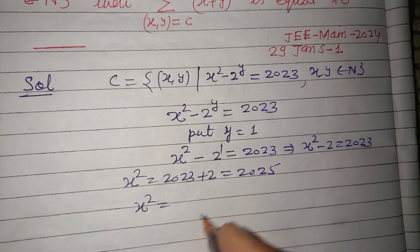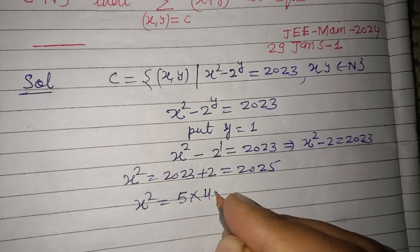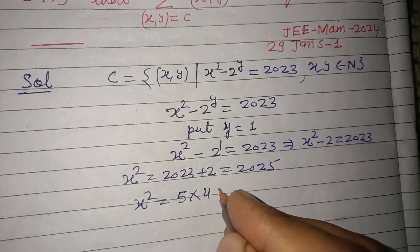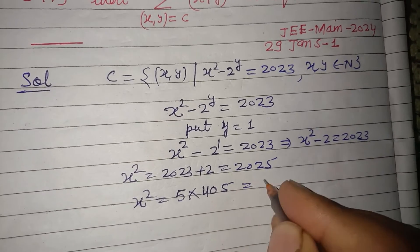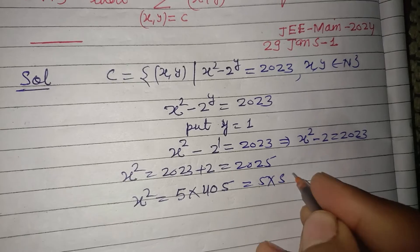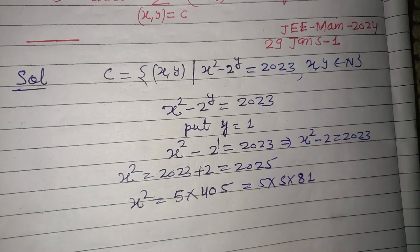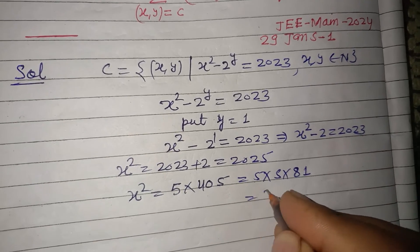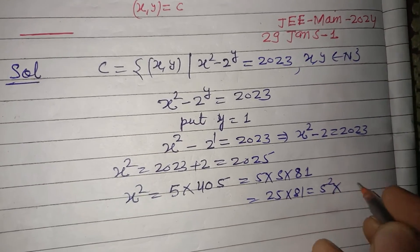And x² = 2025, we break down its factors. So 5 × 405, which is 5 × 5 × 81. This gives us 25 × 81, which is 5² × 9².